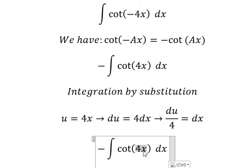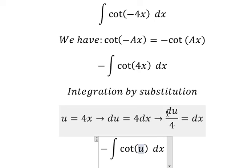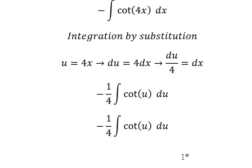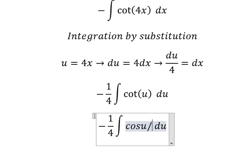We substitute u for 4x and dx for du/4. This gives us -1/4 integral of cot(u) du. We rewrite cotangent u as cosine u over sine u.